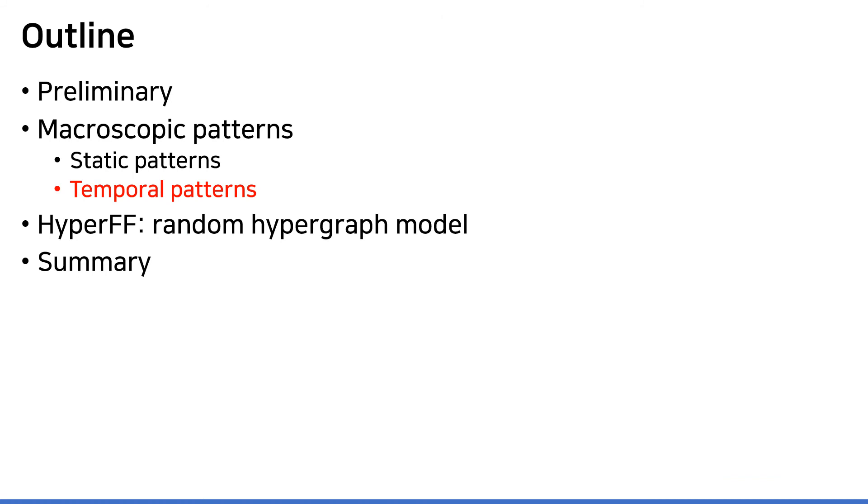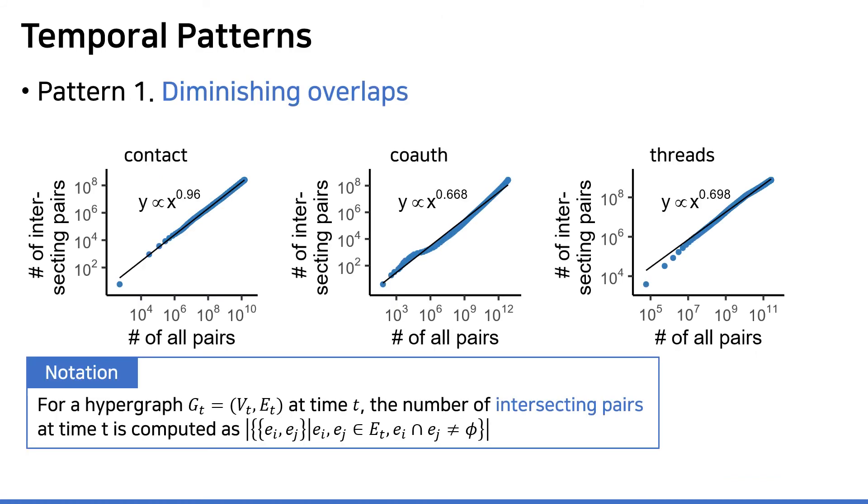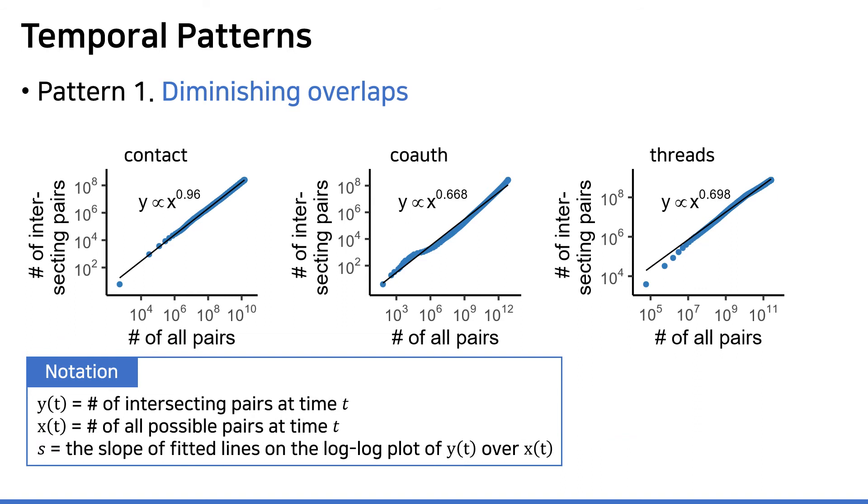Now let's move on to the temporal patterns of real-world hypergraphs. The first temporal pattern we observed is the intersections of hyperedges become less frequent overall. When we denote the number of intersecting pairs at time t by y(t), and then the number of all possible pairs at time t by x(t), we simply plot y(t) versus x(t) on the log-log scale as seen here. Our observation is, the fitted lines on the log-log plot have slope strictly less than 1. By doing some math, this implies the density of interaction defined by y(t) over x(t) decreases over time. So in other words, overall overlaps of hyperedges become less likely over time.